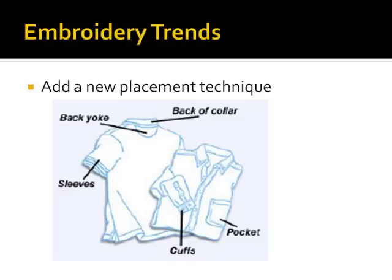Everyone's seen the standard left chest logo, but don't forget there are more places on a shirt to put a logo. Look at areas like the sleeve cuff for logos and names, the shirt placket for initials, or the back of the collar or back of the yoke for websites. And now that we have more places to put logos, let's get into multiple placements with our customers.